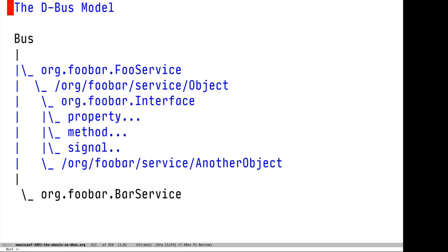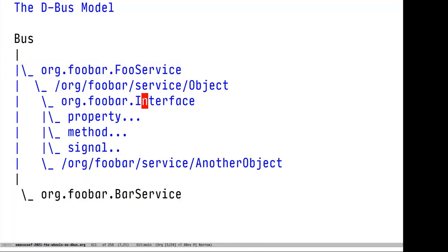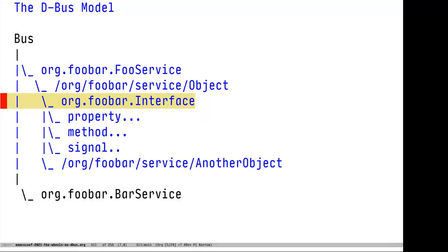Let's look at the abstractions that D-Bus provides. The top-level object is called a bus, and it's like a partition that messages get exchanged inside of — messages don't cross buses. Inside of a bus are services, normally identified in reverse FQDN order, so org.fubar.fuservice. Each service provides some set of features related to a particular area of functionality. Inside of each service are objects, which use a path notation and usually follow the same reverse FQDN format. Each object has one or more interfaces — an interface is like a facet you can use to interact with an object, and inside the interface are properties, methods, and signals.